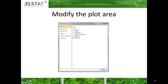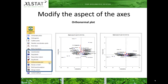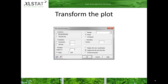You can also modify the background and border of a plot. The axis can be modified. For example, you may need to have an orthonormal plot to get a better interpretation of your results. You can also specify precisely the length of the axis using the ExcelStat tool AxisZoom. A plot can be transformed — AxisZoom offers transformation by symmetry, translation, and rotation, as well as rescaling.